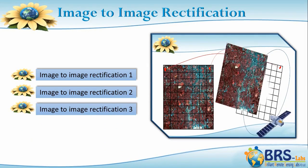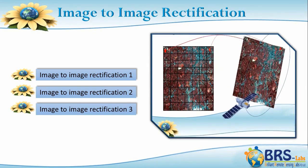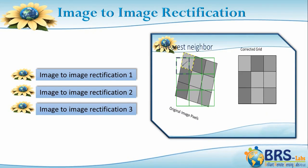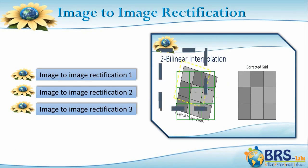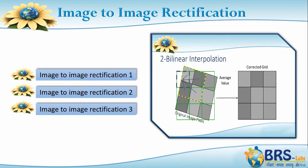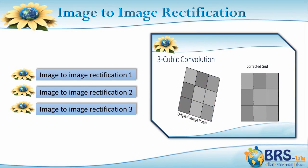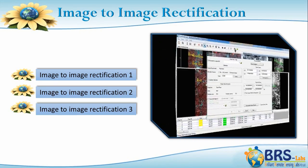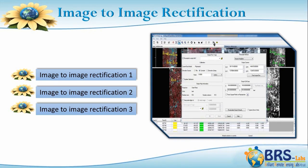In Image-to-Image Rectification lecture 3, we will discuss the implementation of the second step of geographic correction steps, which is the re-sampling process and its implementation.